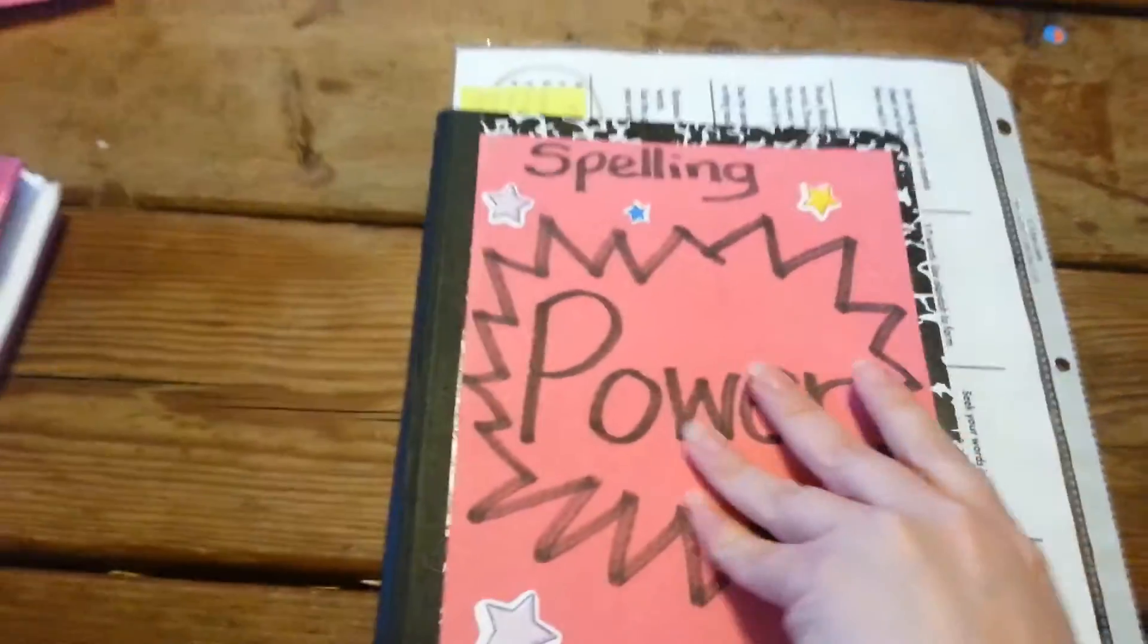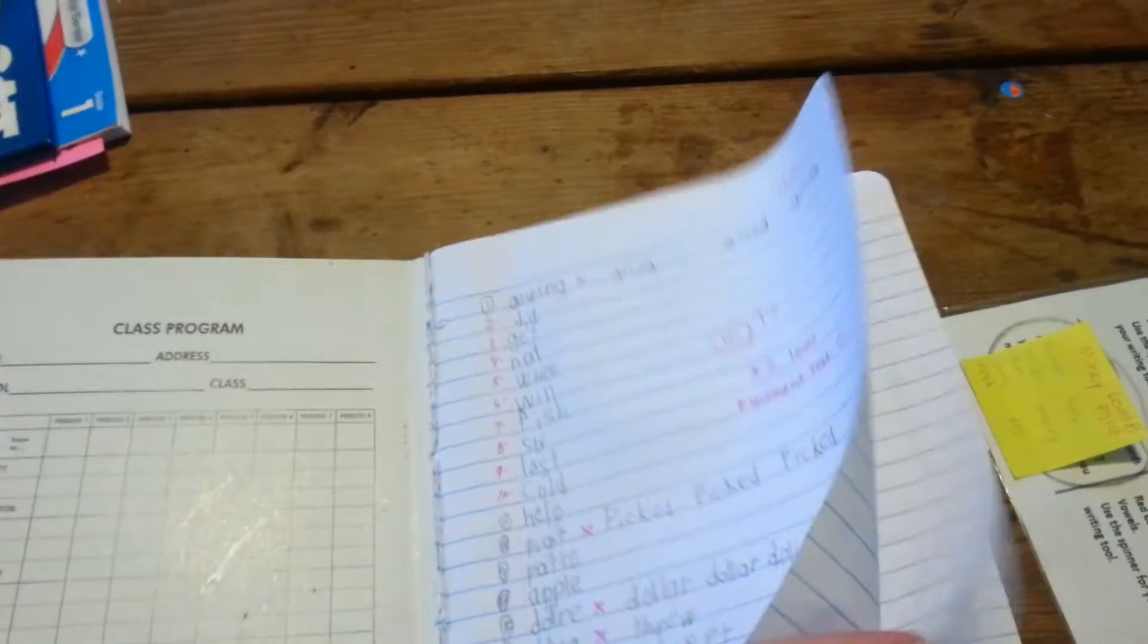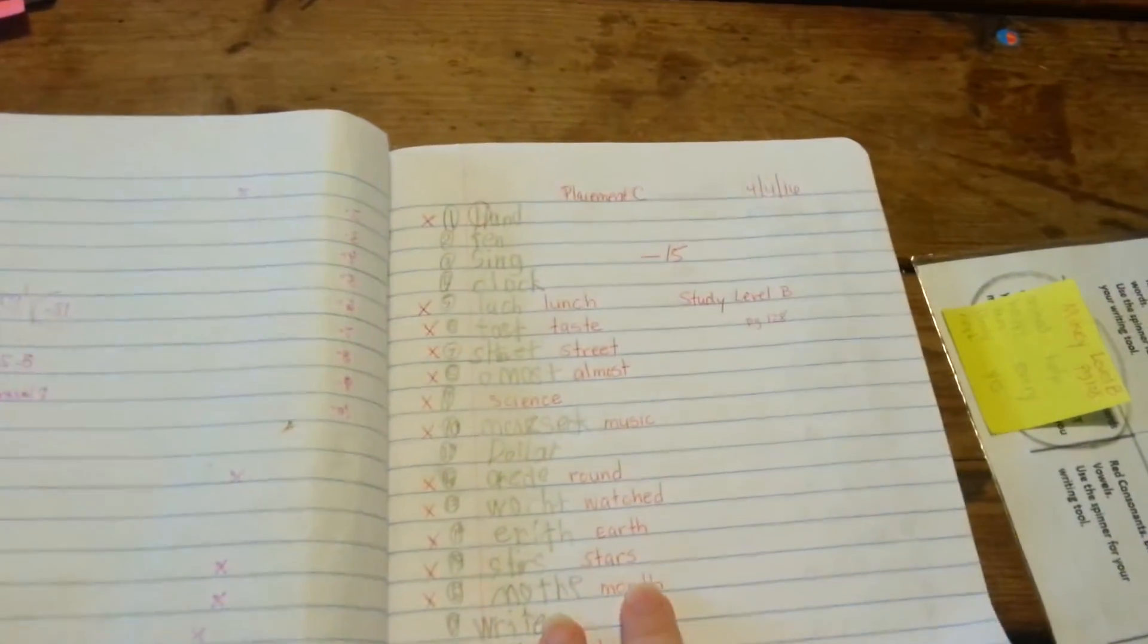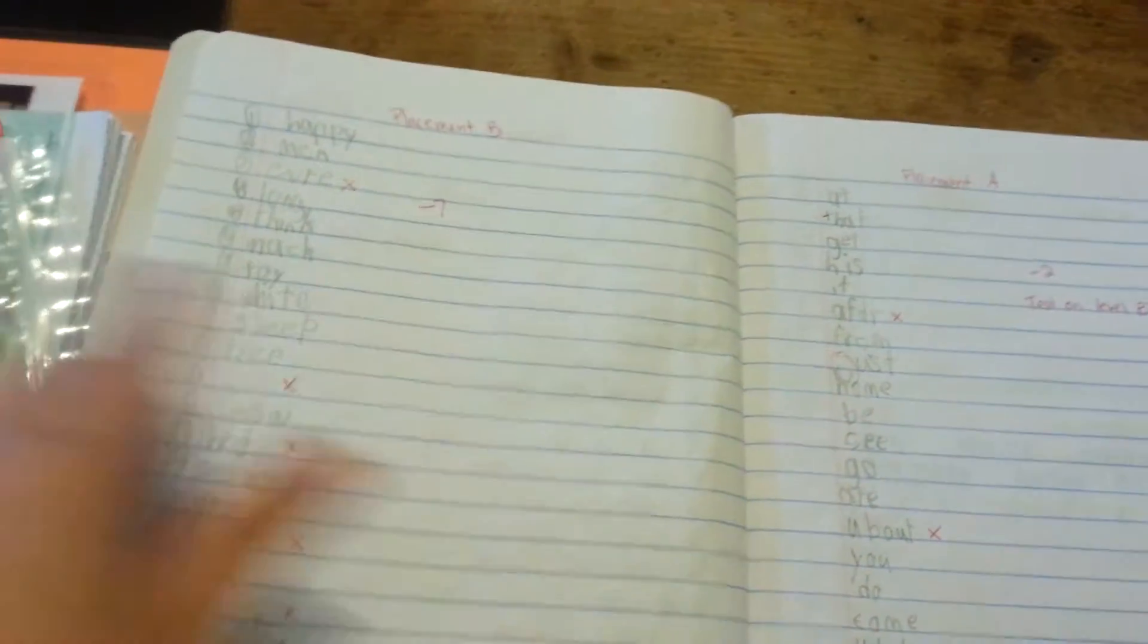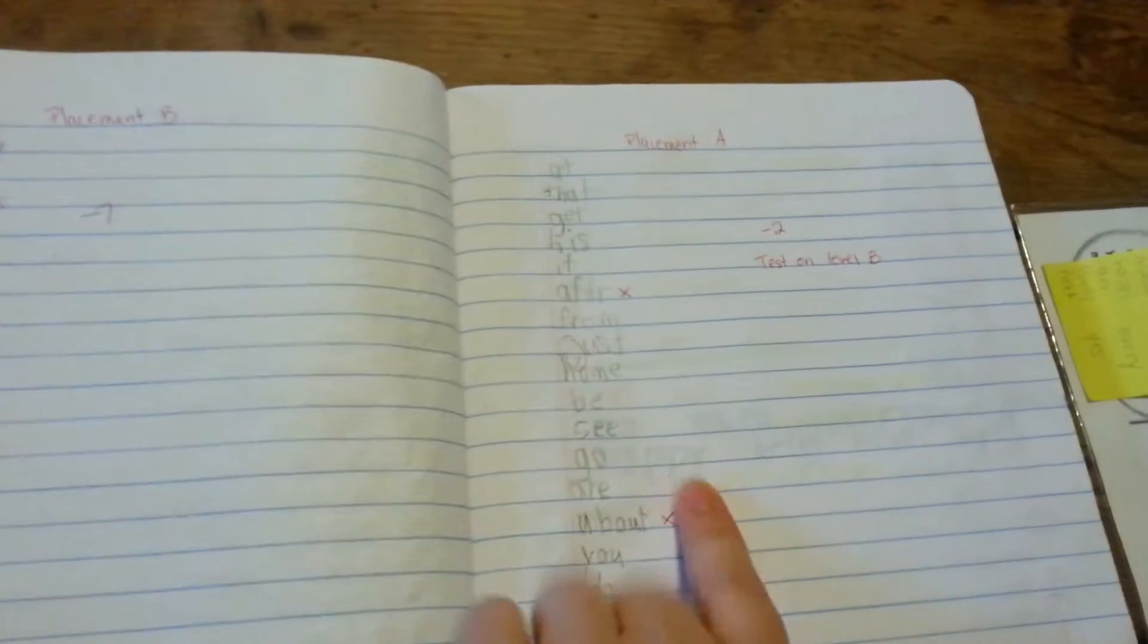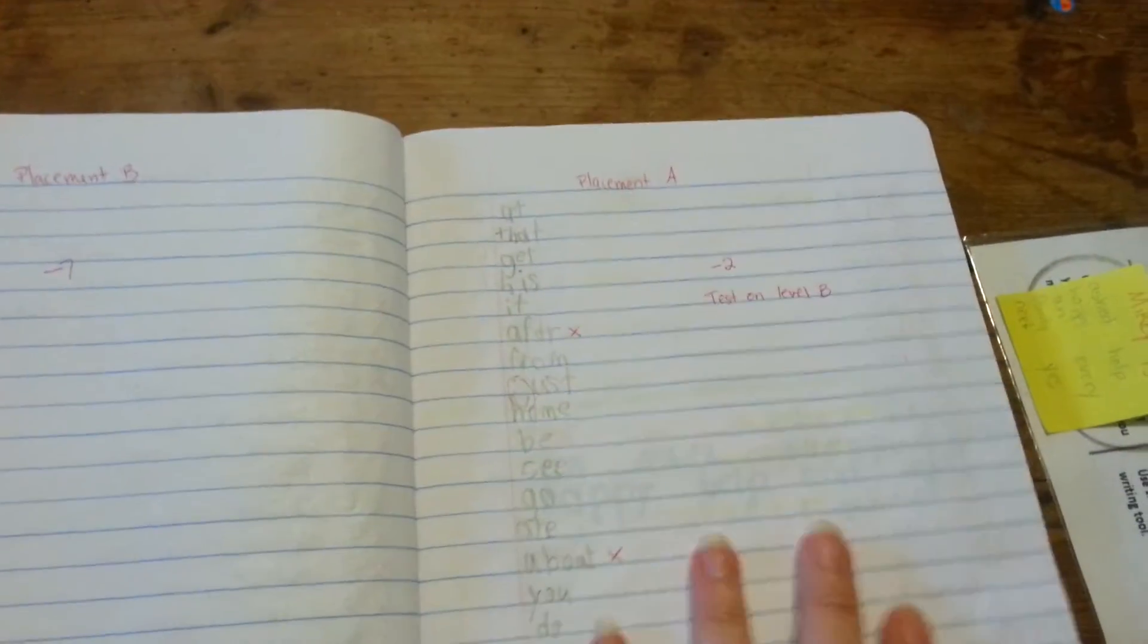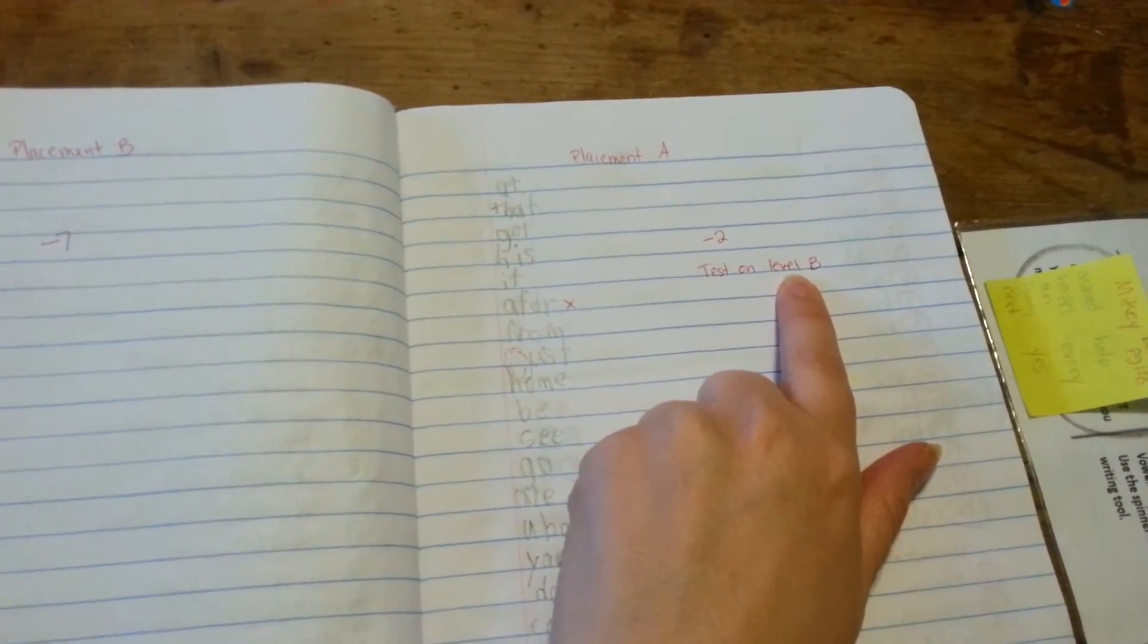And then I'm going to show you the spelling. We're using Spelling Power as I was showing you before. He did his placement test and he got them all wrong. I've said that before. Then I went to placement B to see how he did on that. He still did a bunch of them wrong. So then I went to placement A. Over here he only had two wrong. So because he only had two wrong, the test tells you to give him the level B, which we already did.